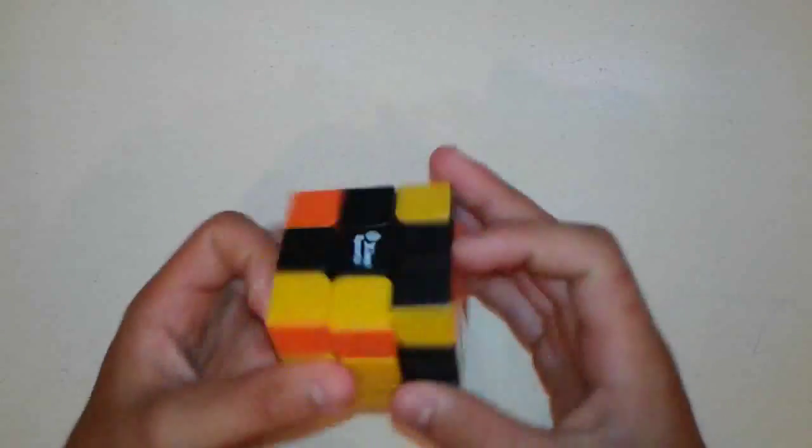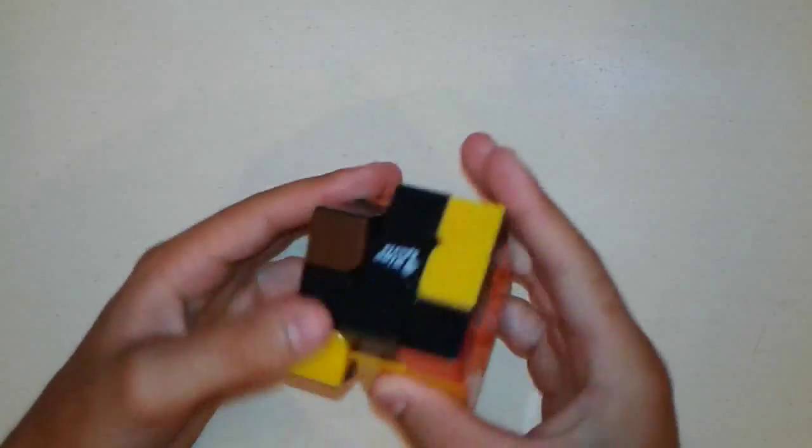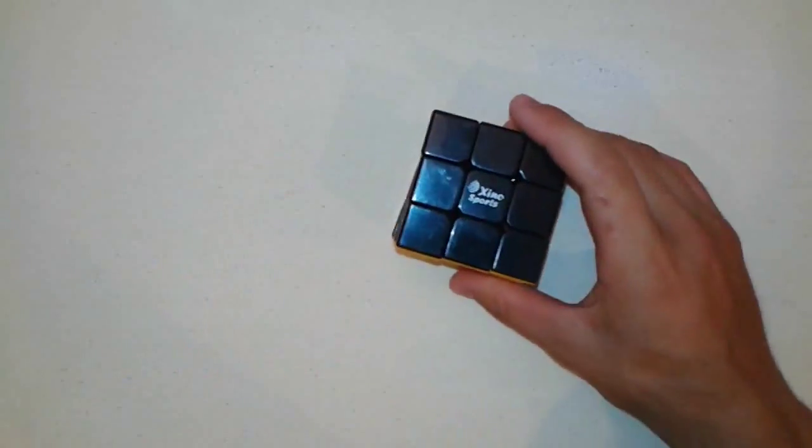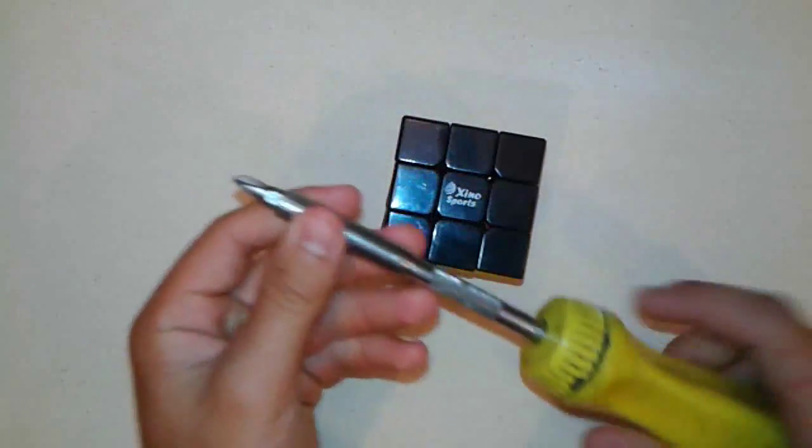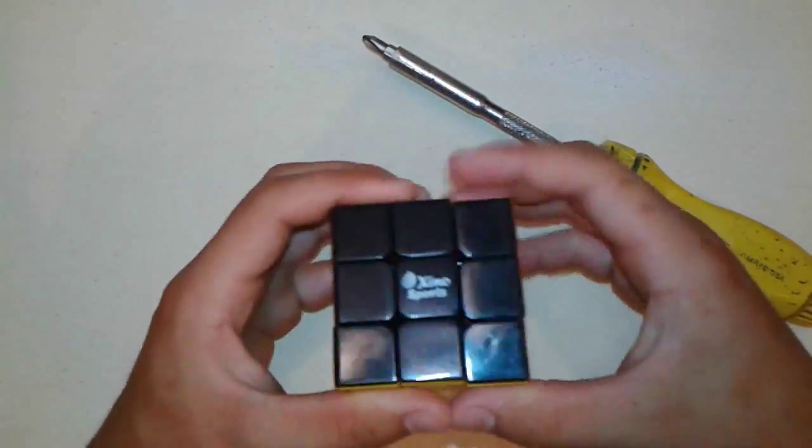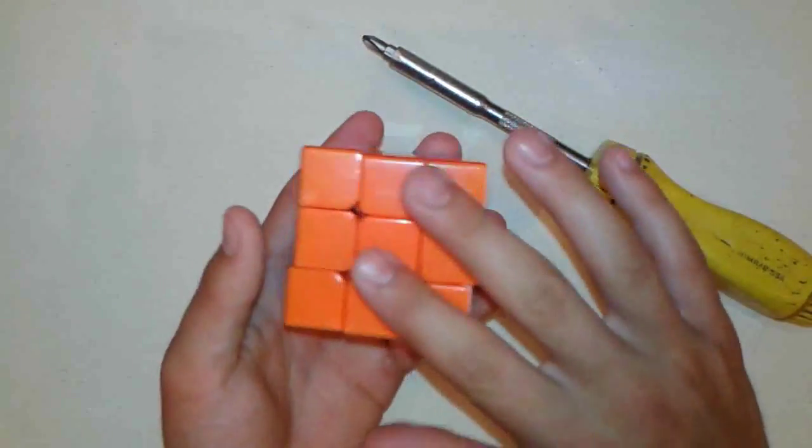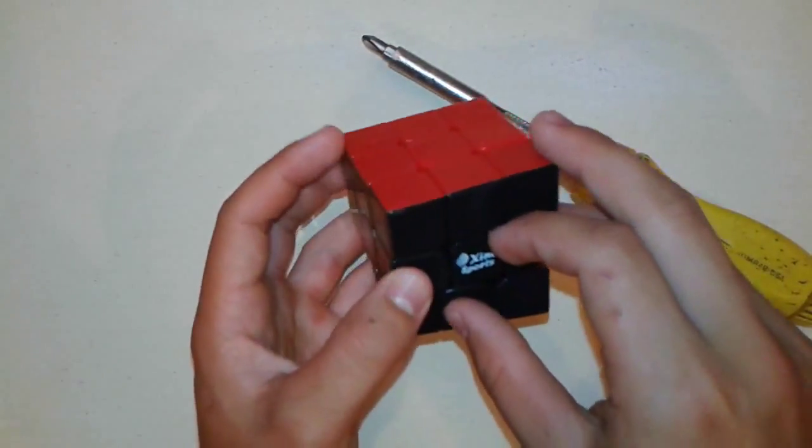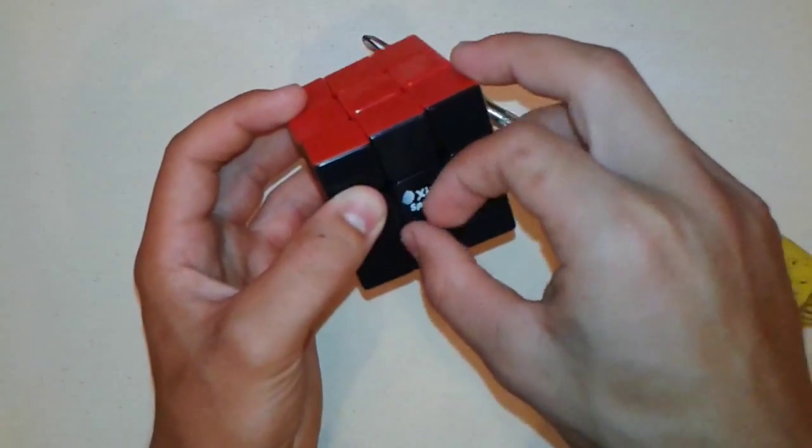So what you're going to need is a screwdriver. I have a screwdriver right here and you're going to need something to pick with. I'm just going to use my nail. So each side has nine of each color, and in the middle the piece actually comes off.